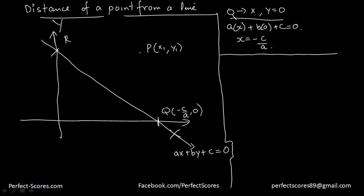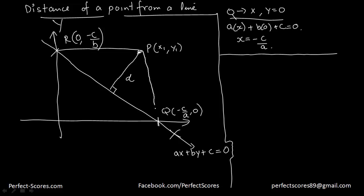Similarly, the coordinates of R would be the value of y when x is 0. If you do the same thing, you get the coordinates of R to be 0 comma negative c by b. We are actually interested in finding the shortest distance between the point and the line, so let me connect this point like this and this point like this.